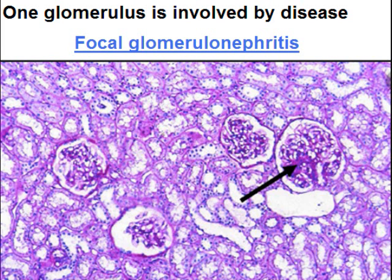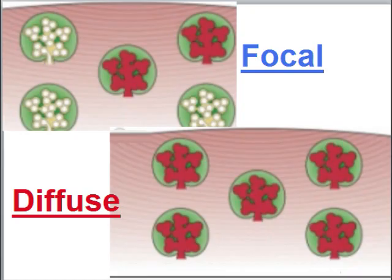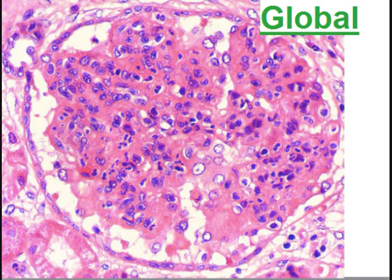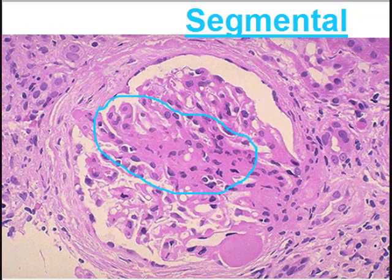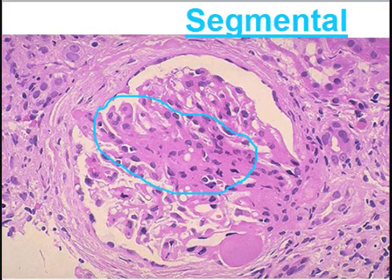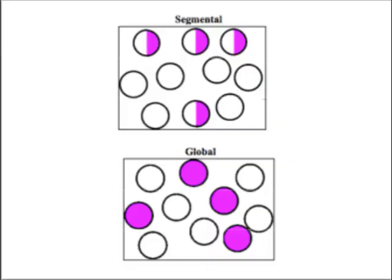Here, 4 glomeruli are shown and only one glomerulus is involved by disease — that is called focal. So if all glomeruli in the kidney are involved, it is called diffuse. If few are uninvolved and few are involved, it is called focal. If a single glomerulus is entirely involved, it is called global. If only a portion of a single glomerulus is involved, it is called segmental. Global and segmental pertain to the single glomerulus.